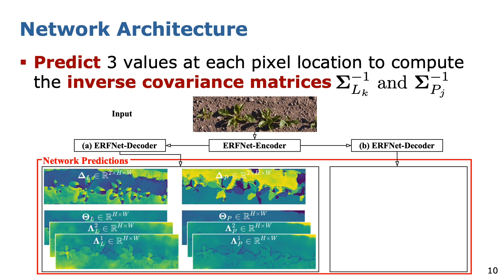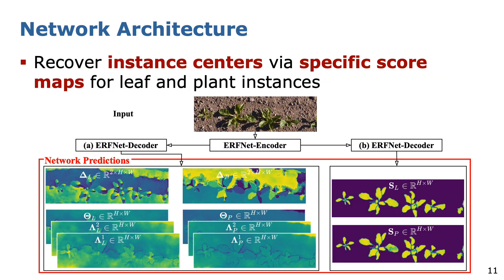We exploit the remaining three feature maps to compute covariance matrices for each plant instance. The right decoder predicts score maps for leaf instances shown at the top and plant instances shown at the bottom, which imitate the previously discussed score maps. We exploit these maps to recover the centroids of leaves and plants respectively.